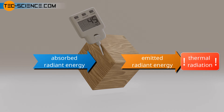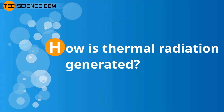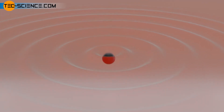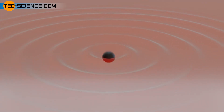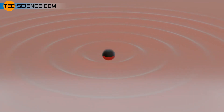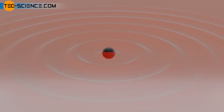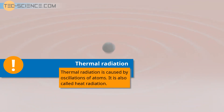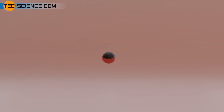Thermal radiation occurs with all objects, not only those in a vacuum. The generation of thermal radiation can be explained by the oscillation of atoms. Every accelerated movement of charged particles leads to the generation of electromagnetic waves — that is, radiation. The higher the temperature, the stronger and faster the particles oscillate, and the more radiation is emitted, meaning a high intensity. Only at absolute zero are there no atomic motions, and the body does not emit any thermal radiation.